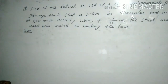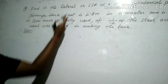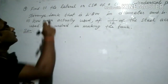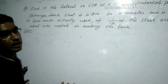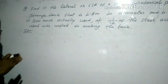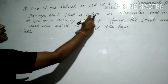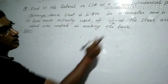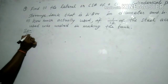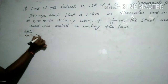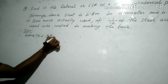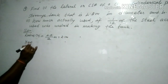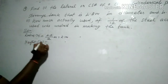Let's come to question number nine: find the lateral surface area — LSA or CSA, meaning the same — of a closed cylindrical petrol storage tank. The tank is closed but we want CSA only. The diameter is 4.2 meters and height is 4.5 meters. So radius equals 4.2 divided by 2, which is 2.1 meters, and height equals 4.5 meters.